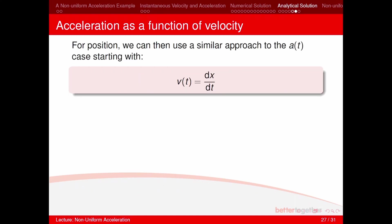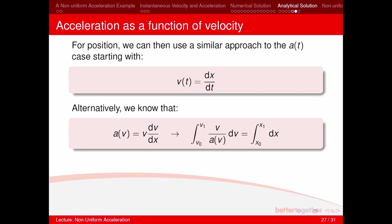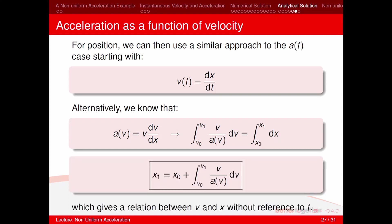For position when acceleration is a function of velocity, we start with v(t) = dx/dt and use the identity a(v) = v dv/dx. Rearranging gives: x_1 = x_0 + ∫(v / a(v)) dv. This provides a relation between velocity and position without reference to time.